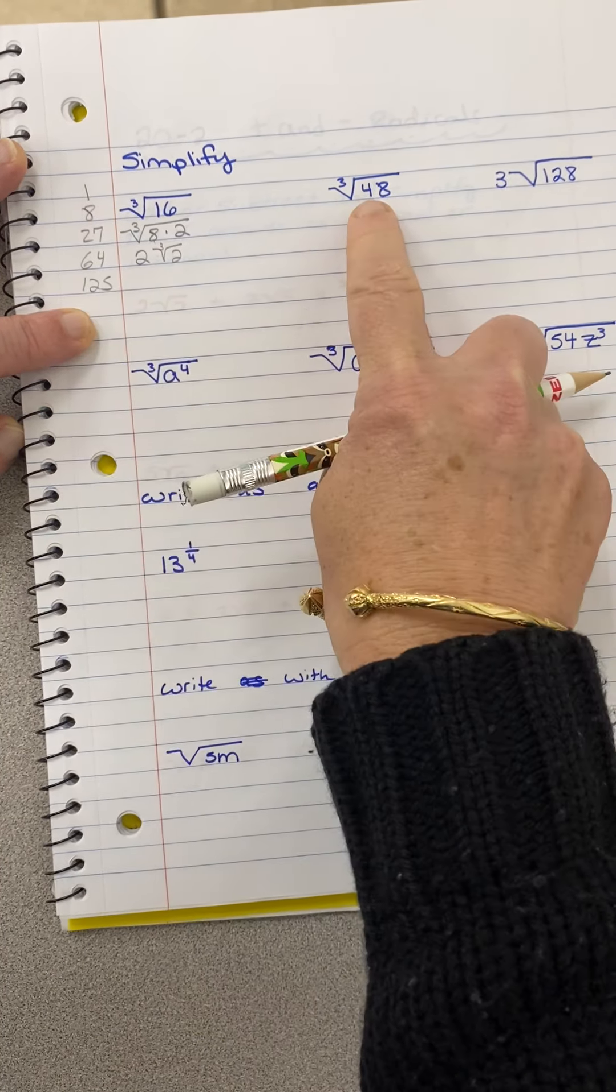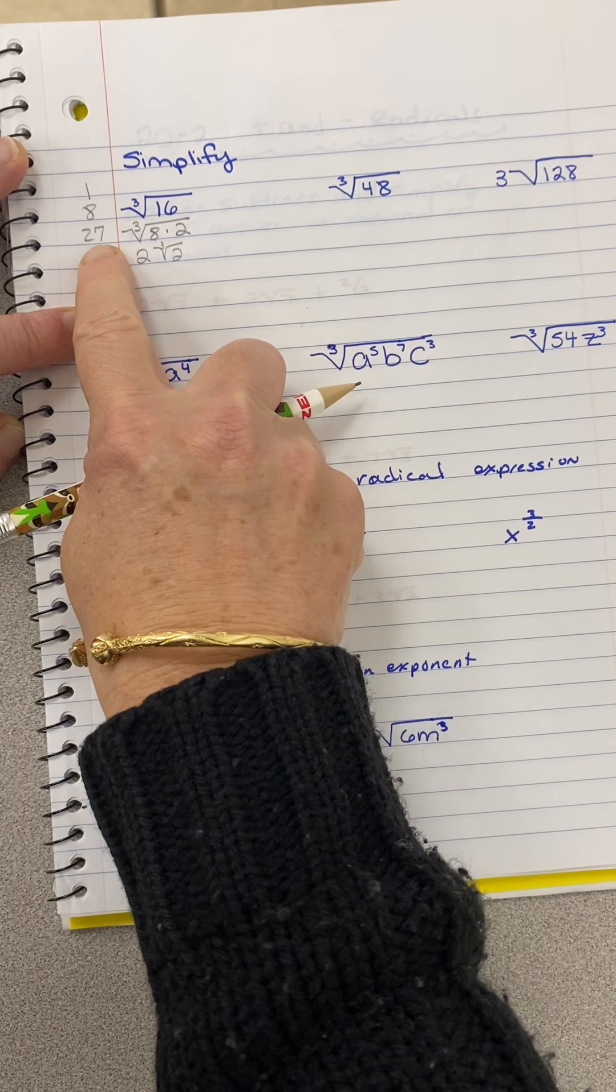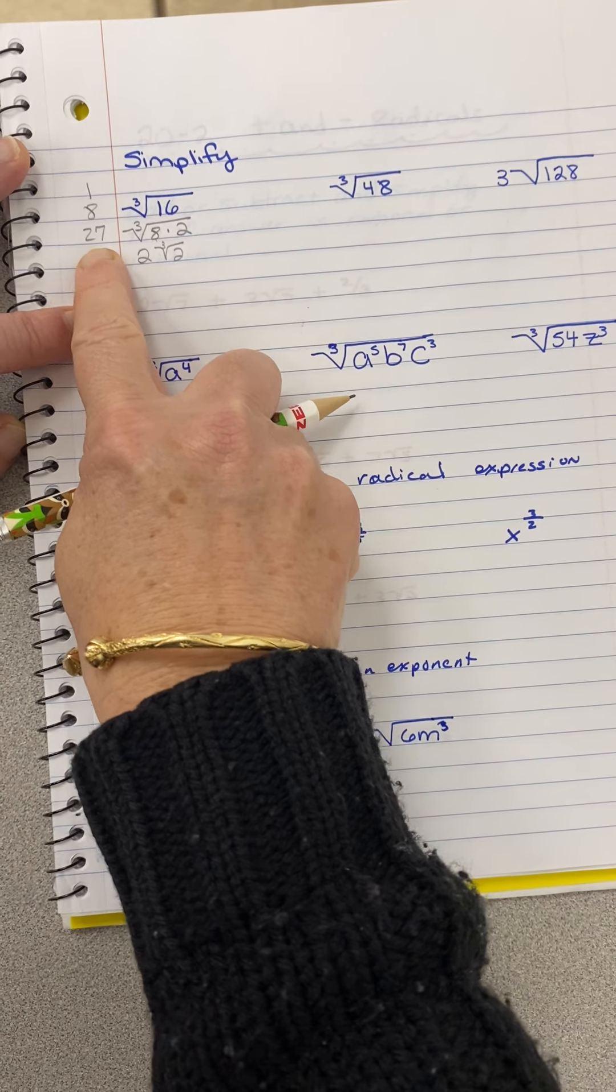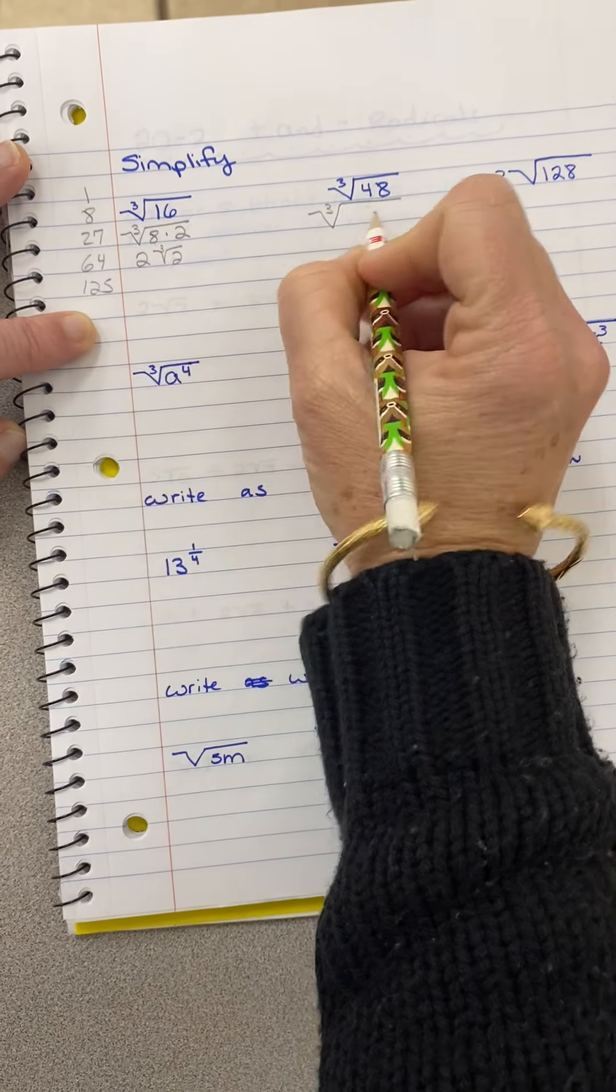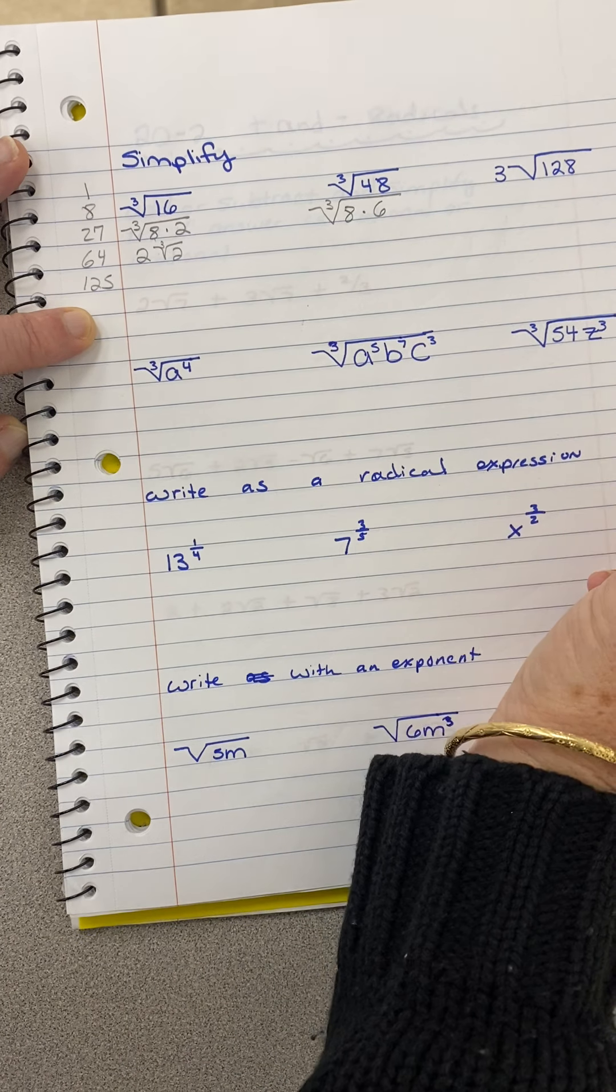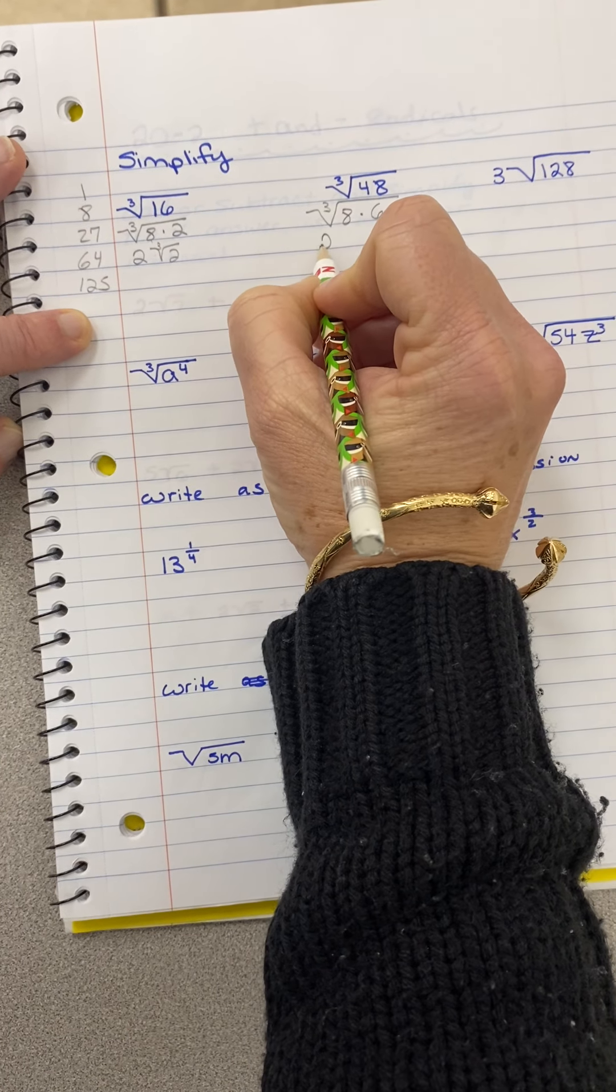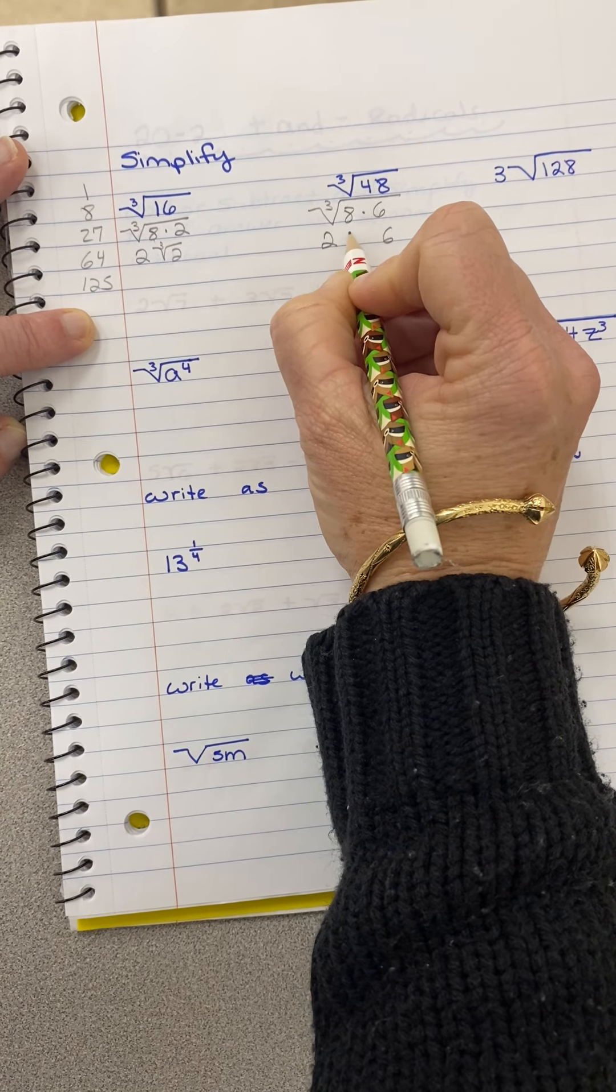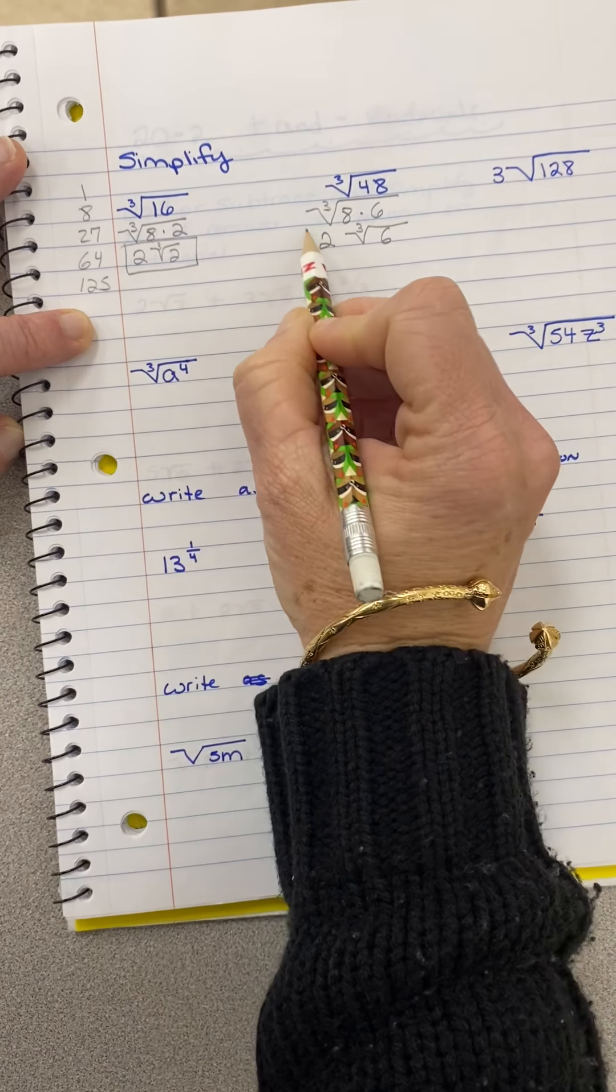So now the same thing. Once I have this list, I'm going to keep going back to it. I have 48. What perfect cube goes into 48? I don't think 27 does. 64, no that's too big. So I'm going to go ahead and say it's 8. 8 times 6 is 48. The cube root of 8 is 2. We just did that. And I can't cube root that. So that's my answer.